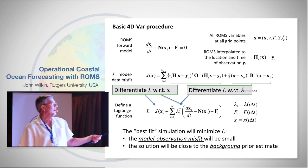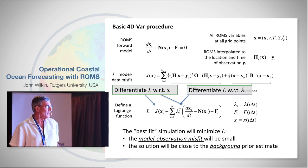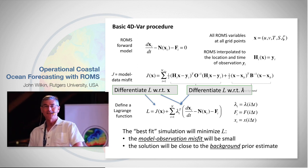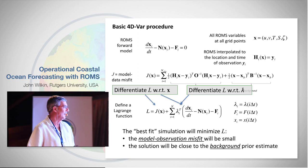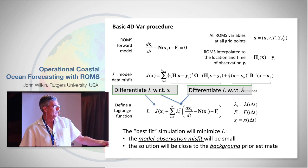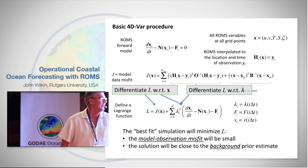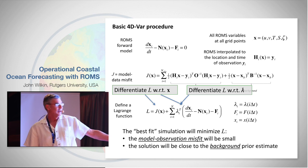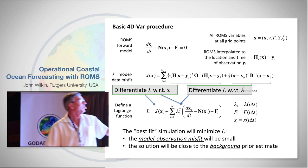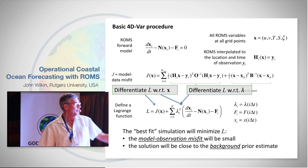We want to make this model-data misfit small. Remember Lagrange multipliers from calculus? We define a Lagrange function J as a function of the model state — that's the thing we want to minimize. Then we add another term: I take a set of factors lambda and multiply them by ROMS. That's always zero because the model always numerically equals zero — so I've just added a bunch of zeros. The trick is this Lagrange multiplier.